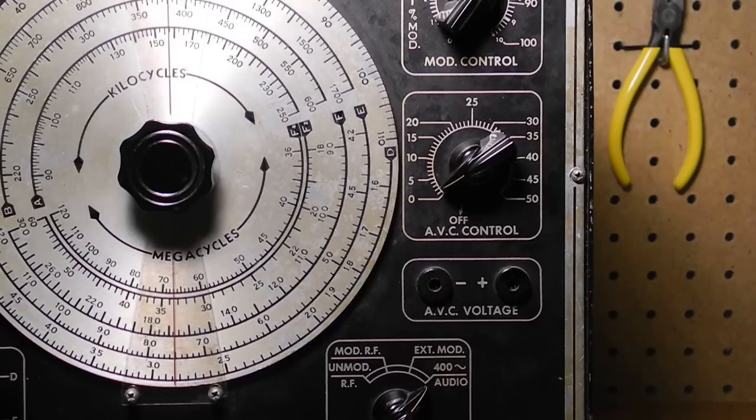Precision argued that this is not realistic as most receivers operate with some AVC action. Their system was during alignment to inject an artificial AVC voltage that was comparable to what the receiver would experience in typical operation. This would, in theory, align the receiver more accurately.